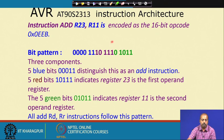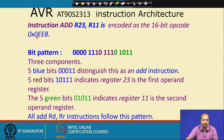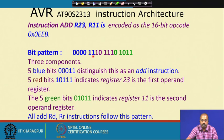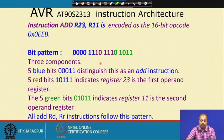For example, ADD R23, R11 will be given as a 16-bit code 0EEB, and the bit pattern coding is like this. Out of that, these 5 bits — 00011 — correspond to the ADD instruction. The next 5 red bits, 10111, give register number 23 as the first operand, and then 01011, that is 11, is the second operand register.